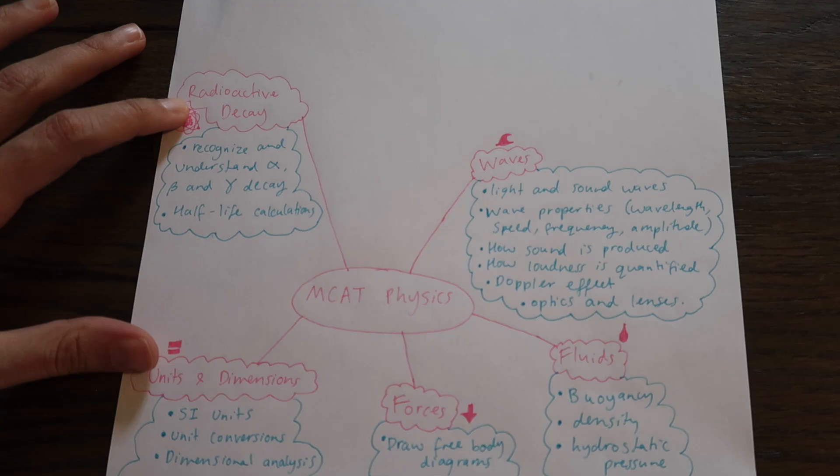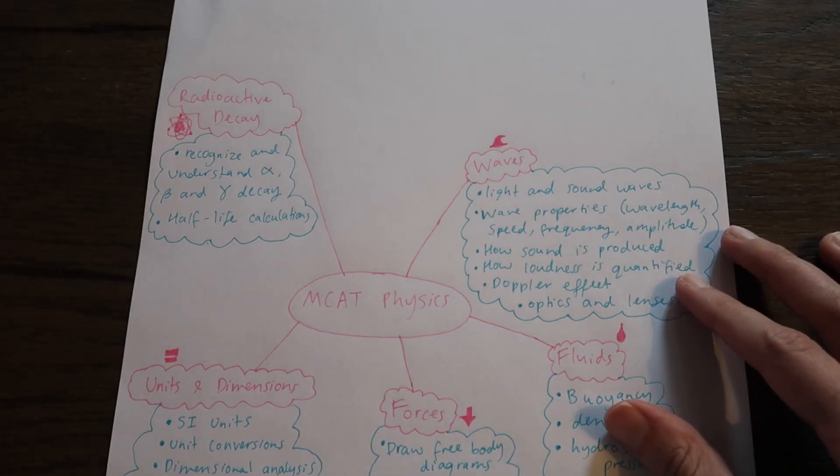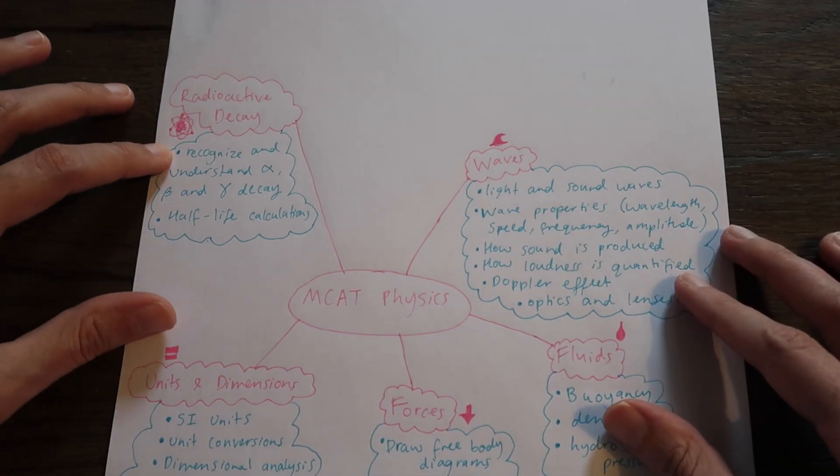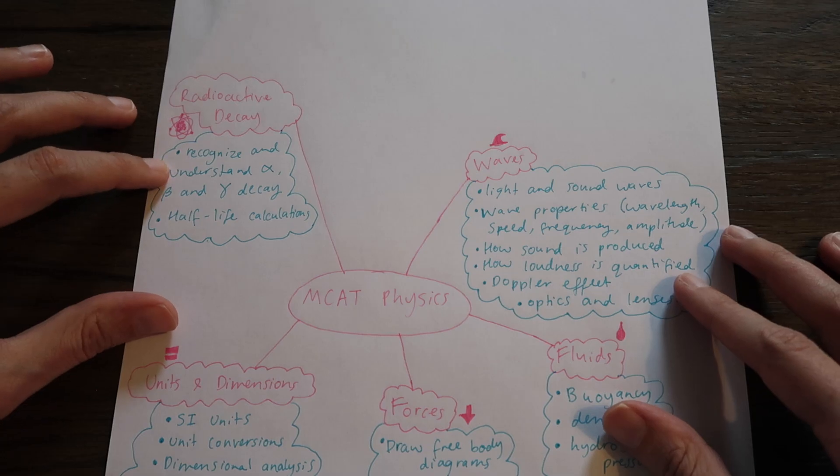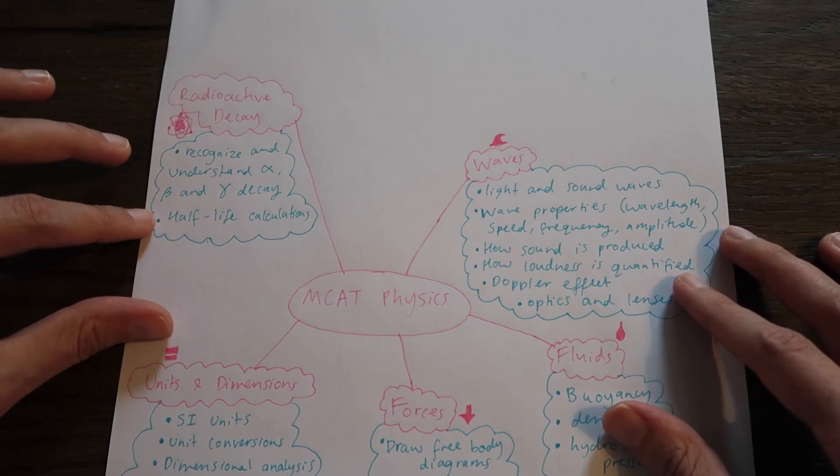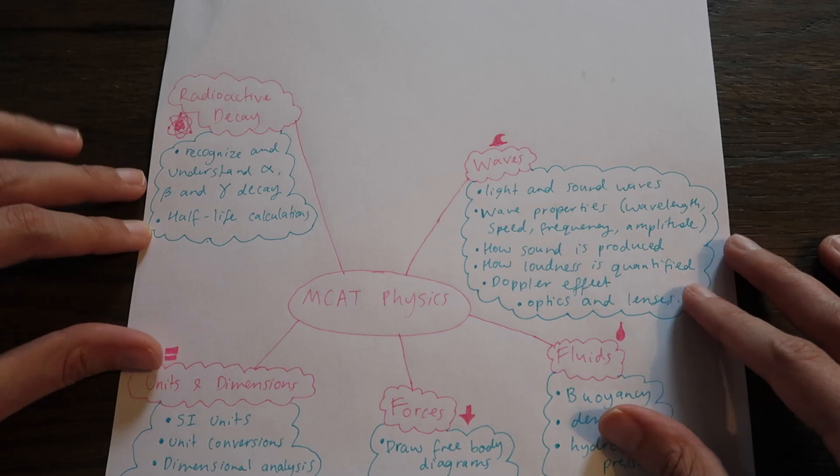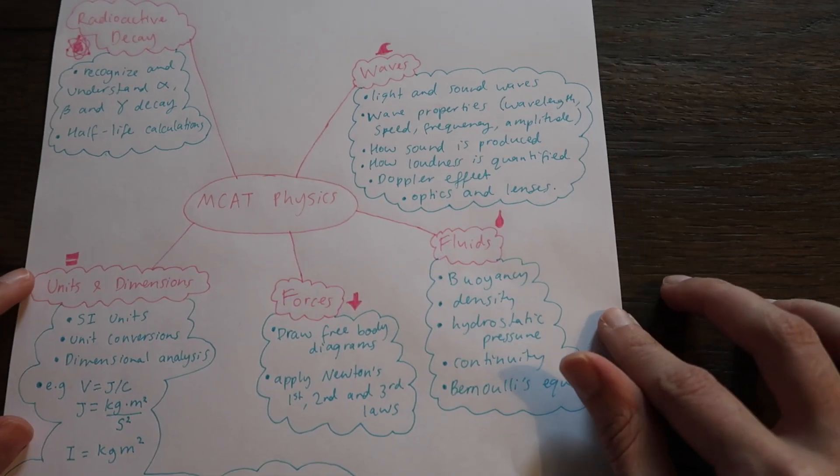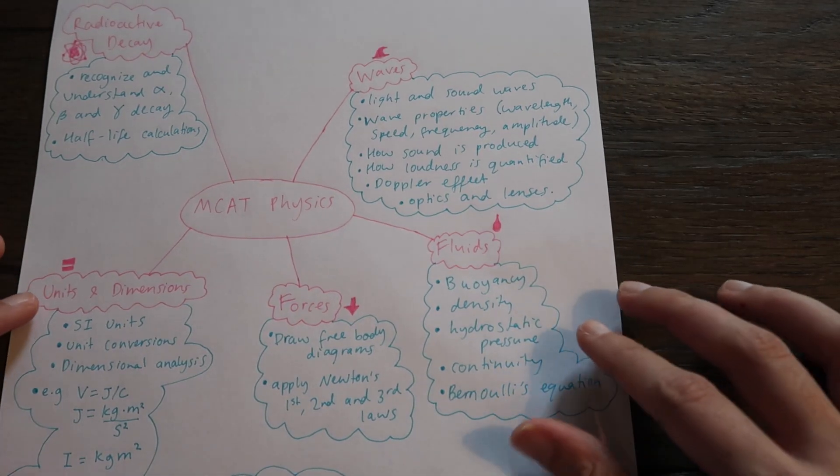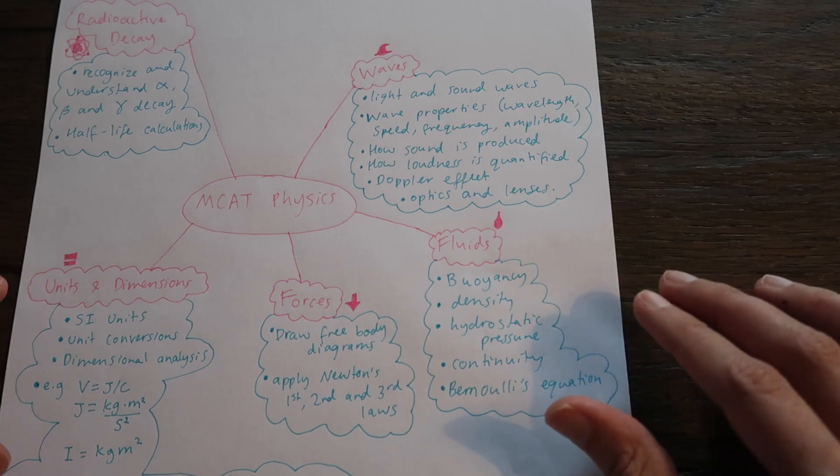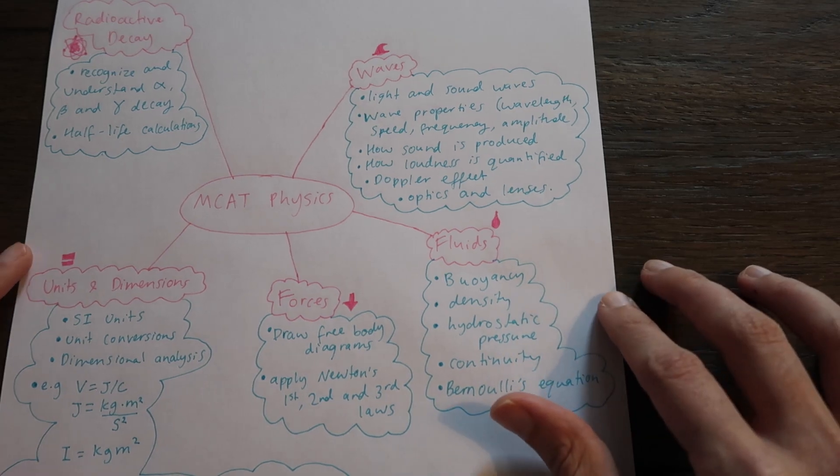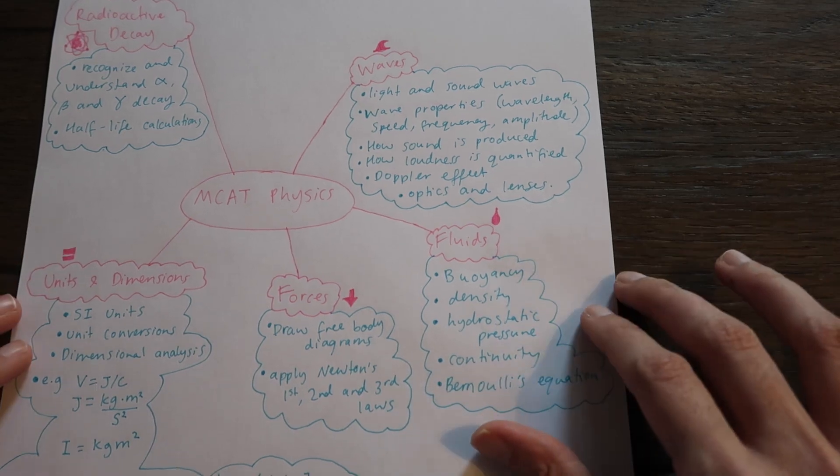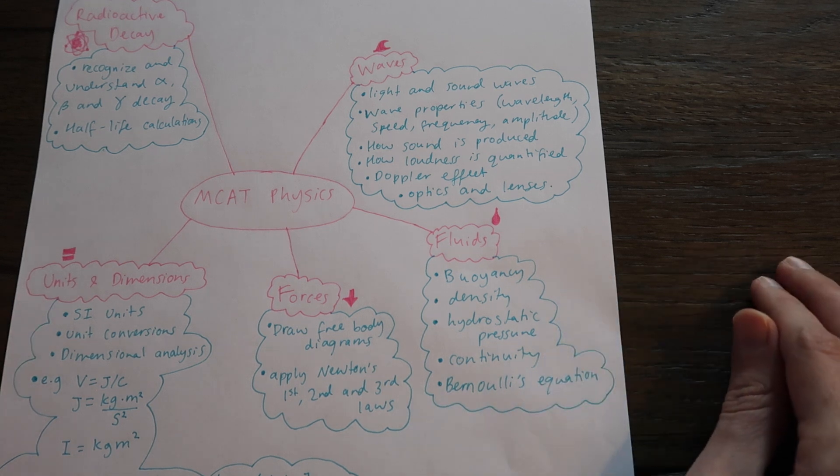For our last section radioactive decay, this is that nuclear physics part. You'd want to be able to recognize and understand alpha, beta and gamma decay and also be able to do half-life calculations. Of course this isn't an extensive list of every possible thing you'd need to know but I think it's broad enough to kind of encompass all these must-know areas of physics to doing well on the MCAT.